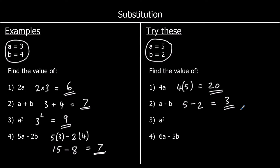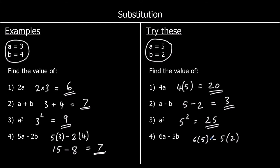Question 3: a squared. So a is 5, so it's 5 squared, and that's 25. And question 4: 6a, so 6 times 5, minus 5b, so 5 times 2. 6 times 5 is 30, 5 times 2 is 10. So we've got 30 minus 10, and that is 20.